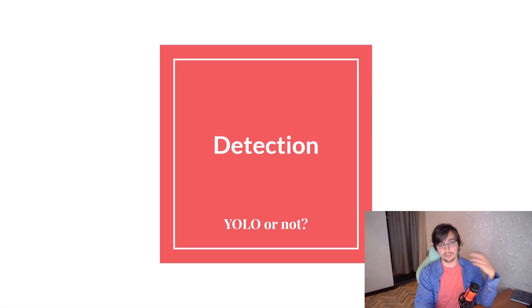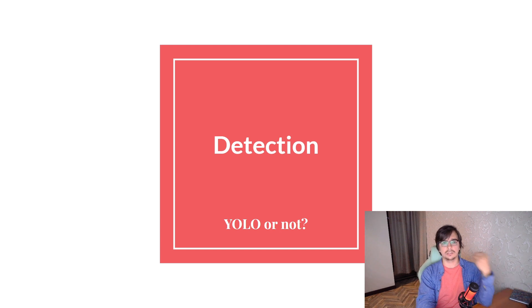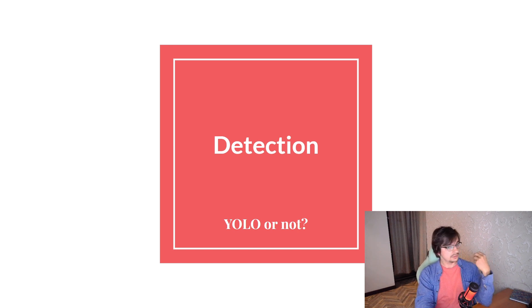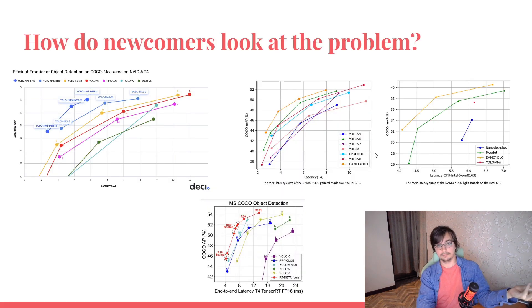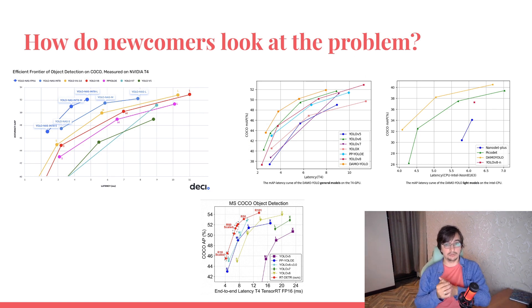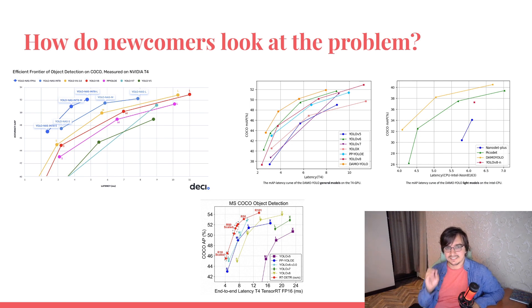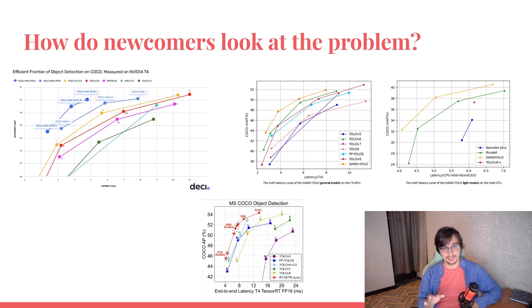I have a lot of experience with different startups, and it seems that most teams look at neural networks as follows: they just look at some graphs, choose the best network for speed, and go straight to production. But this approach, of course, never works when the prototype hits production.